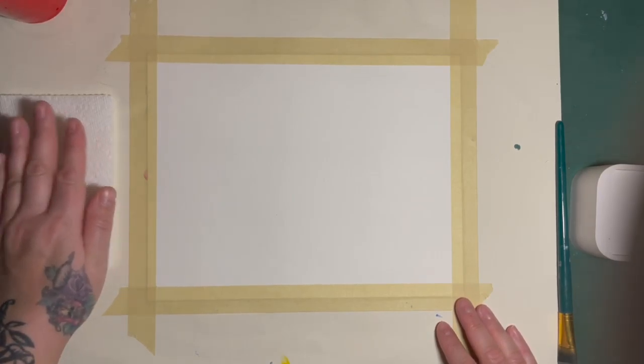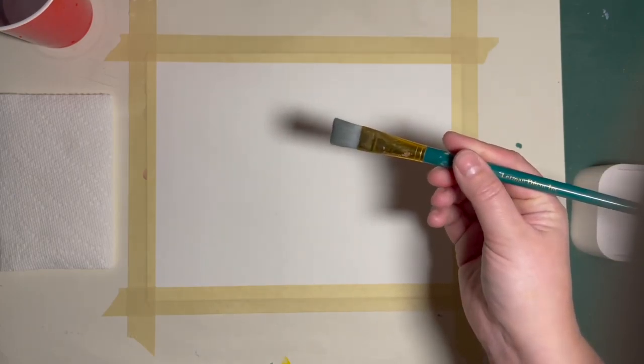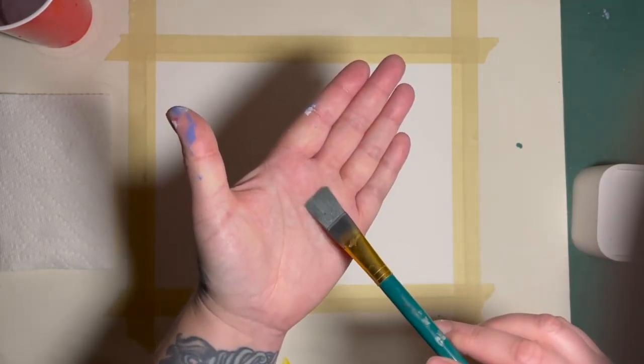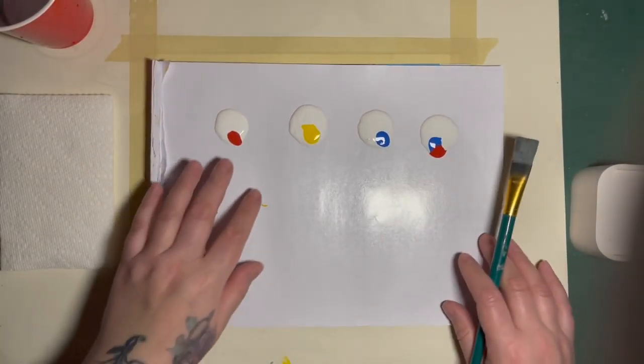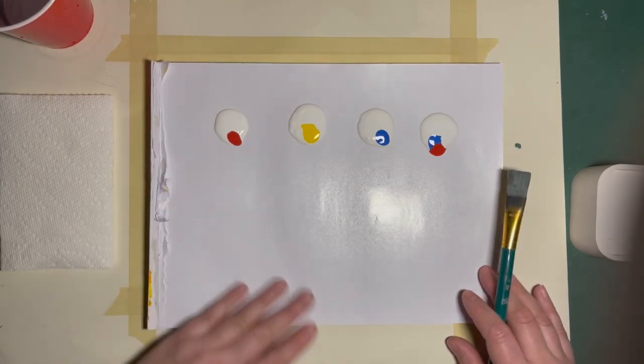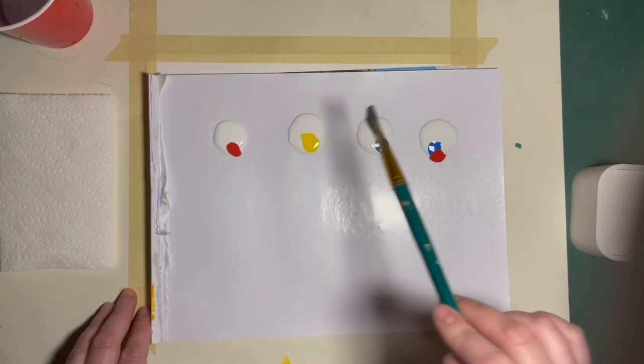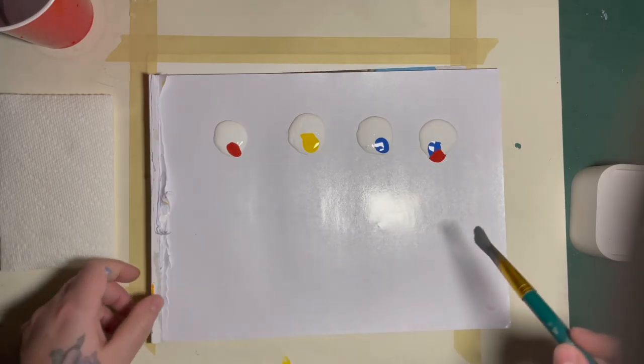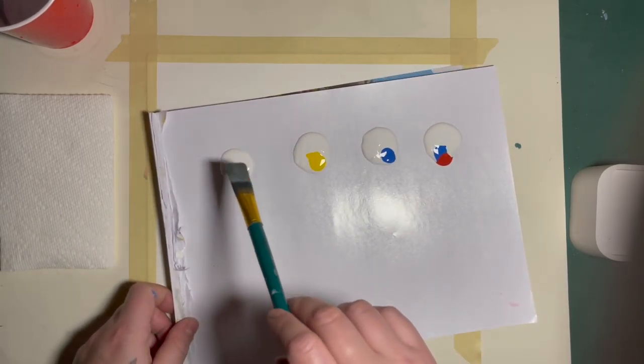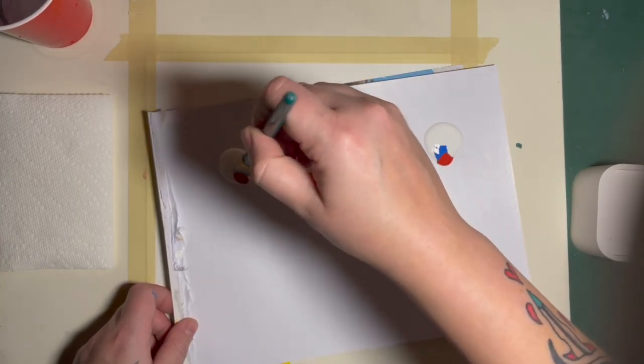So we're going to have our paper towel ready, our rinse cup with water, and our paintbrush, a nice big flat one. And our paint colors we're going to use are going to be pastel colors. So an easy way to make pastel colors is to use a lot of white and just a little drop of each color you want to turn into a nice light pastel.